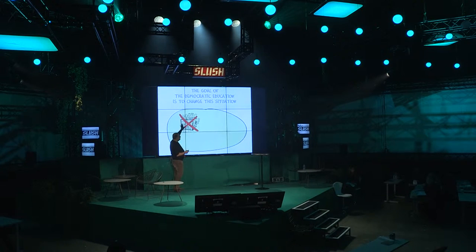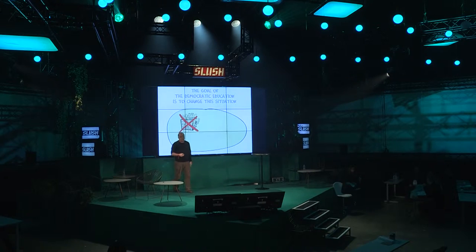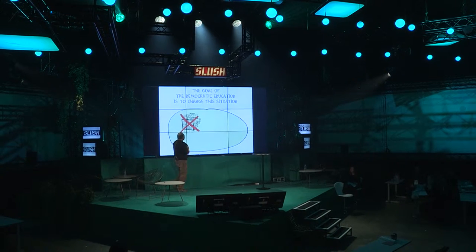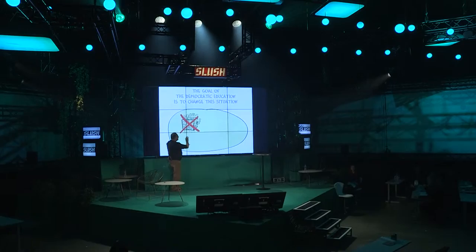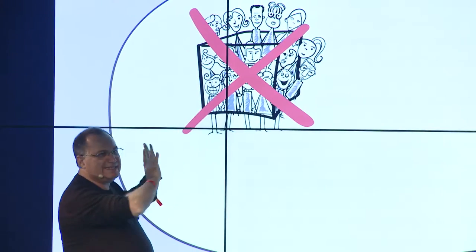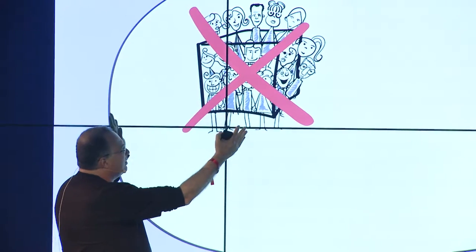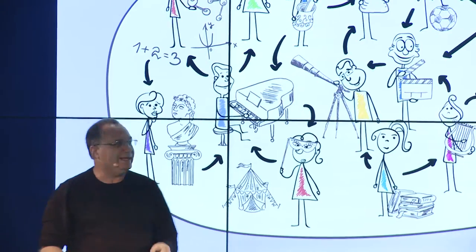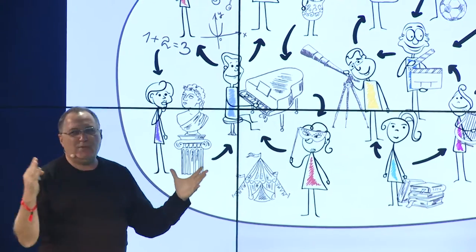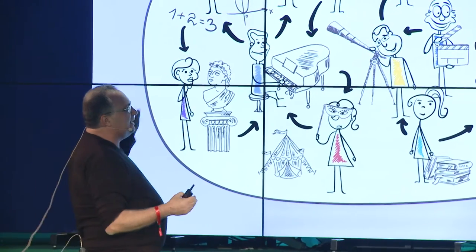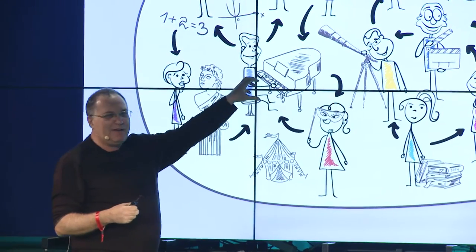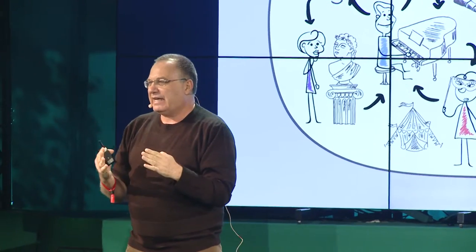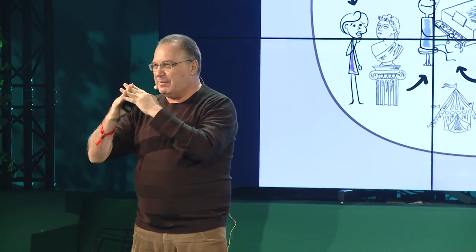In democratic education, we don't accept this idea of the square — the fixed box. Why? Because the knowledge we know is doubling itself all the time. So the box becomes irrelevant from moment to moment. How we see our class: we say it's a network, where everyone finds their strong area — the place that Ken Robinson calls 'the element.'